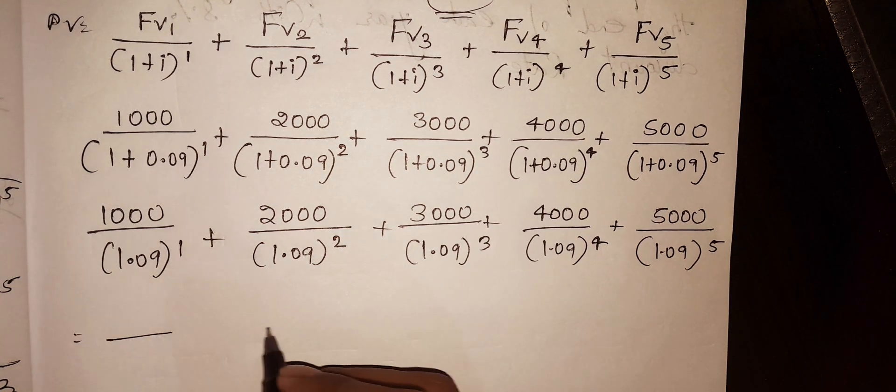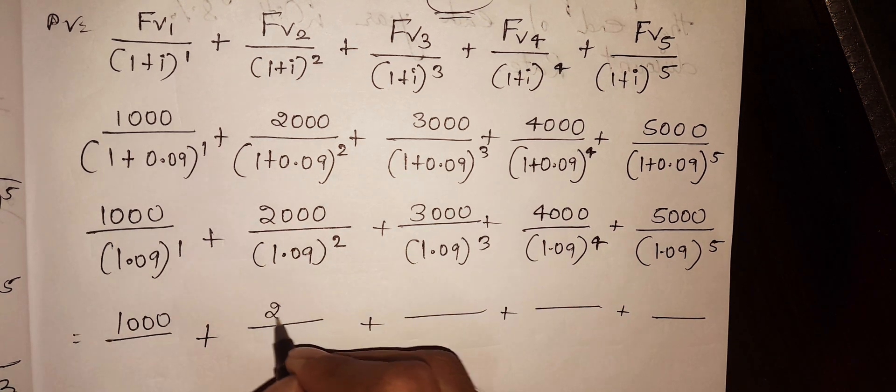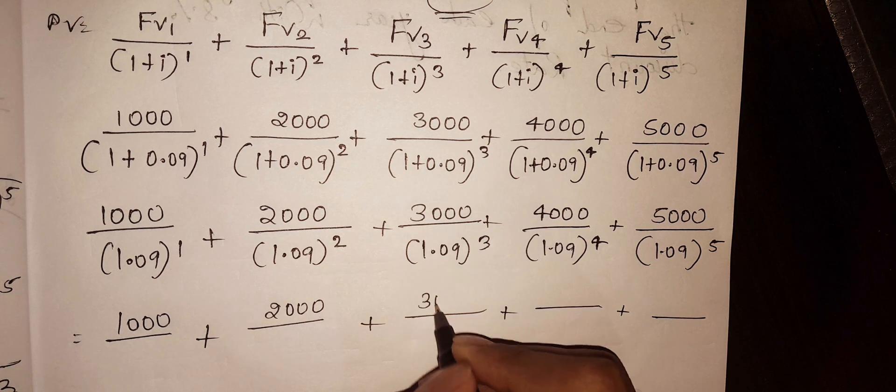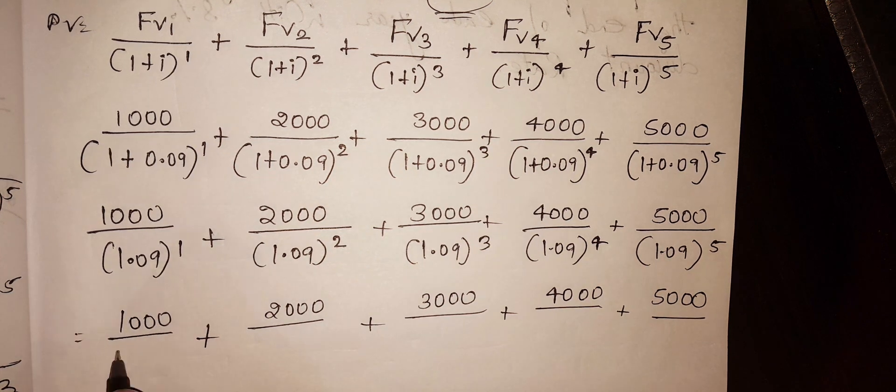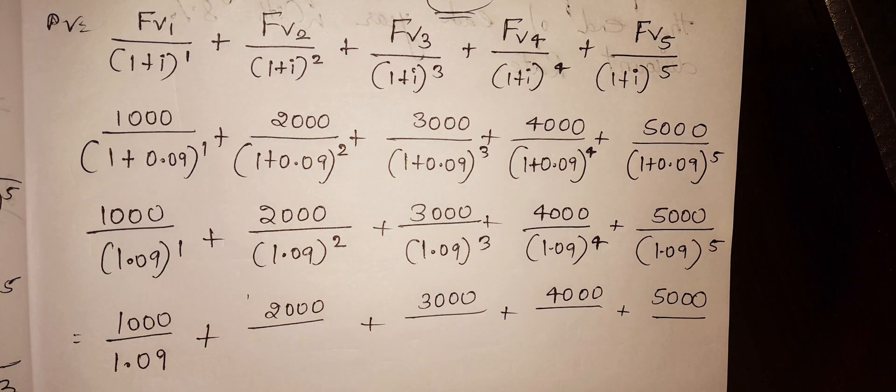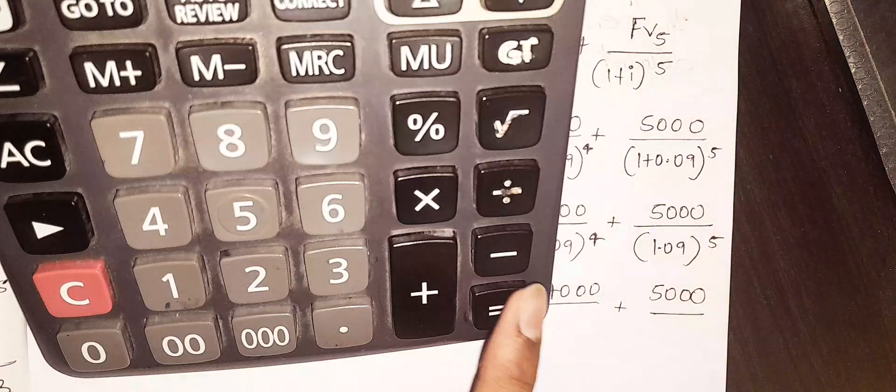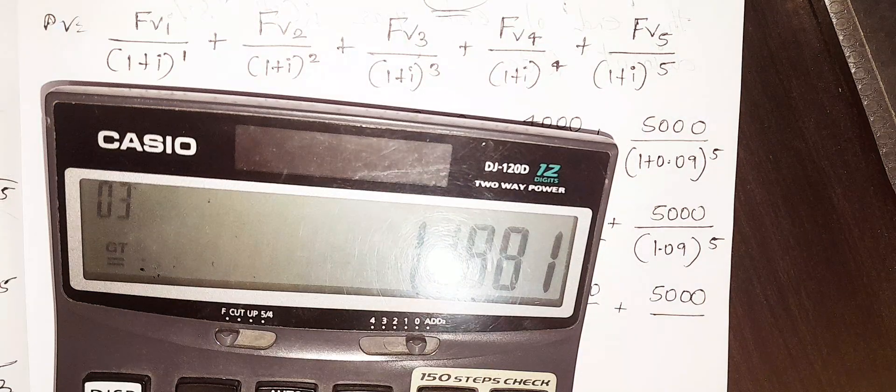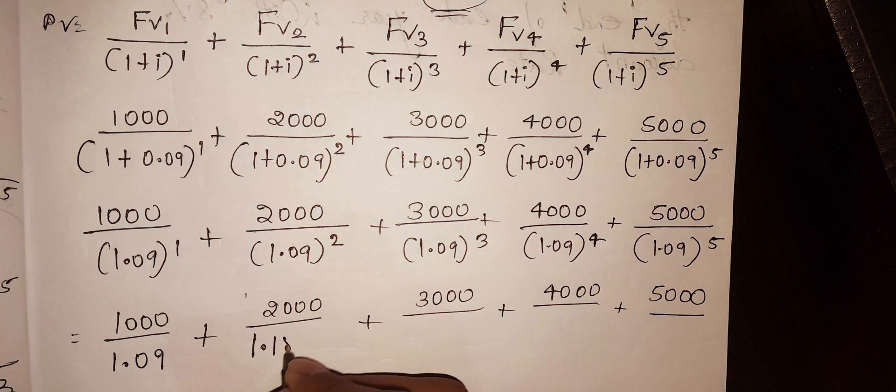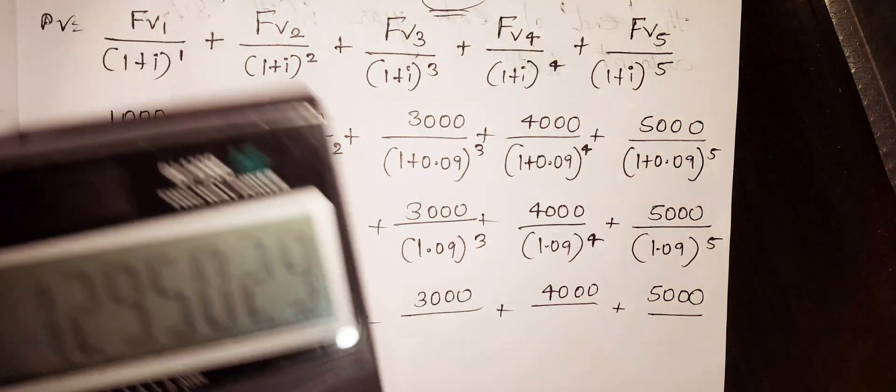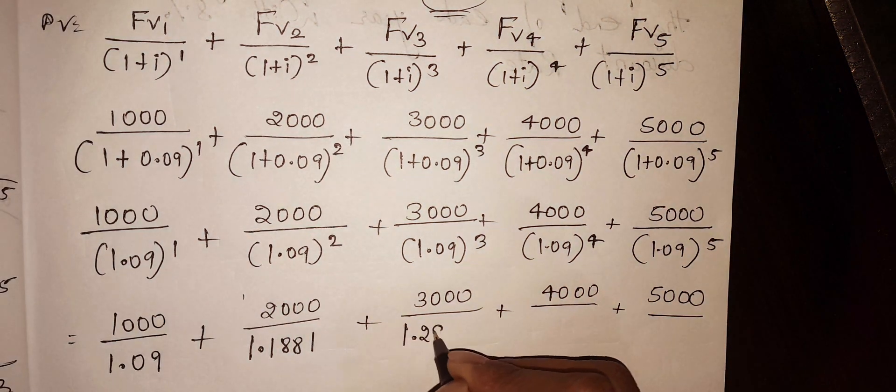Anything to the power of 1 will be the same. So the first denominator is 1.09. The second year is 1.09 squared, which equals 1.1881. The third equals 1.2950.